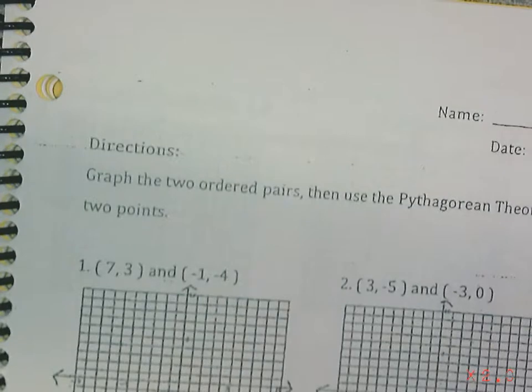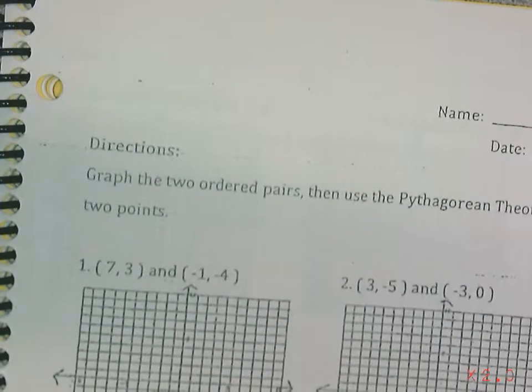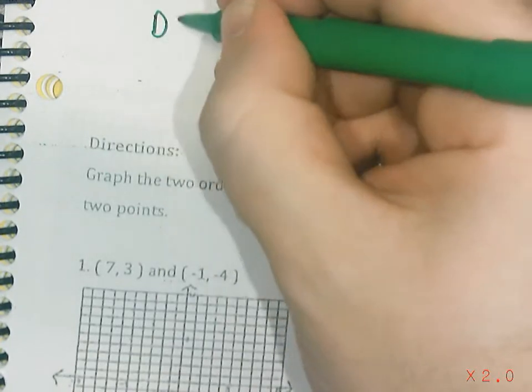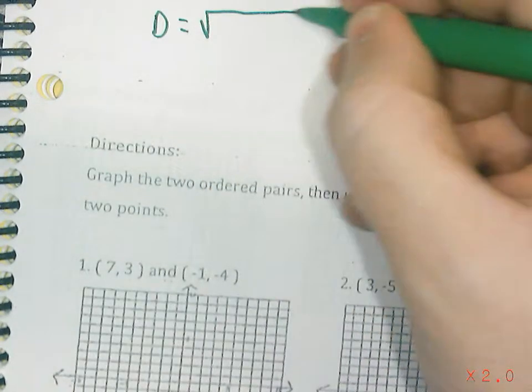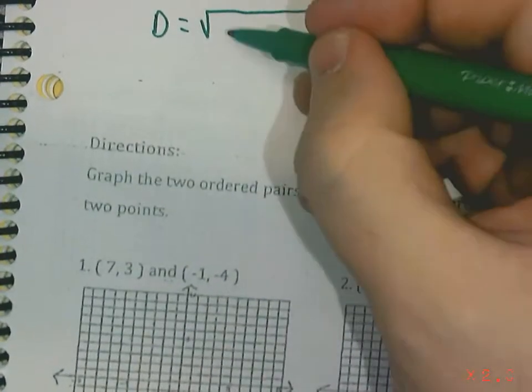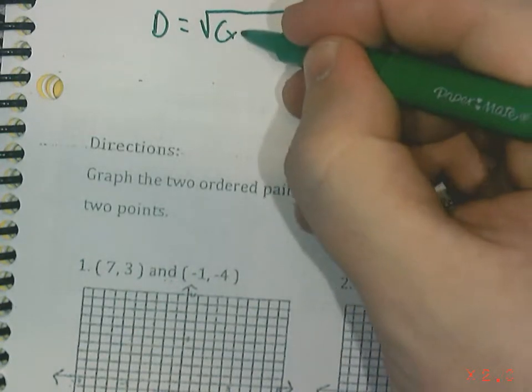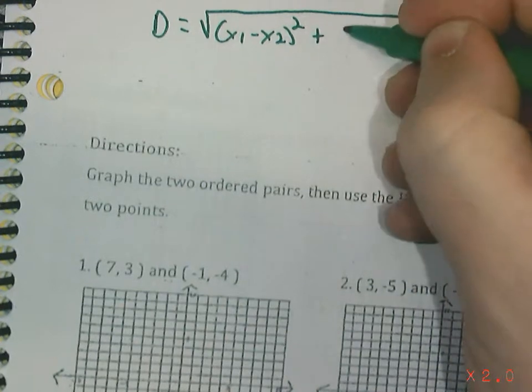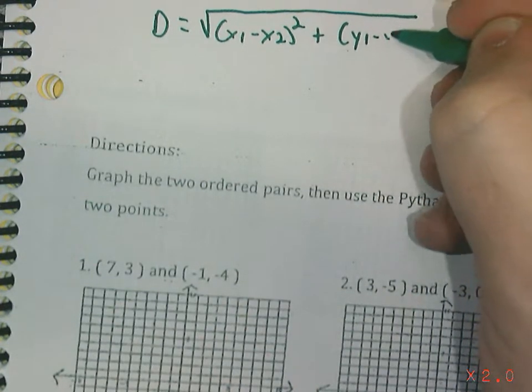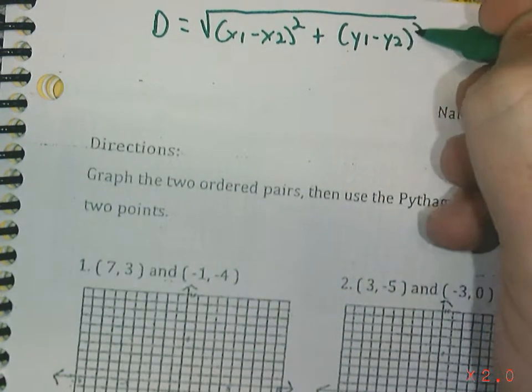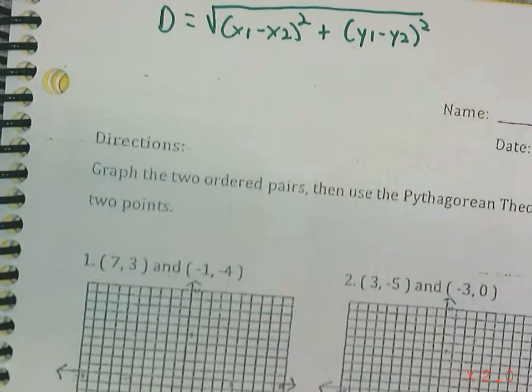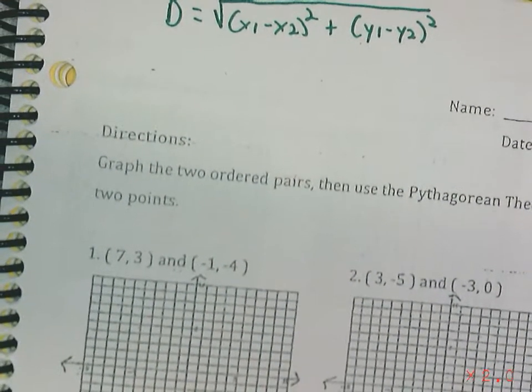This is just a variation of the Pythagorean theorem, which I will show you in just a second. But the distance formula says the distance is equal to the square root of x1 minus x2 squared plus y1 minus y2 squared. So basically this formula helps you find the distance between two points on the coordinate plane.